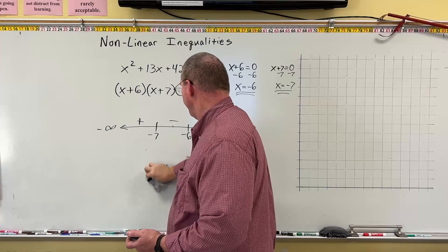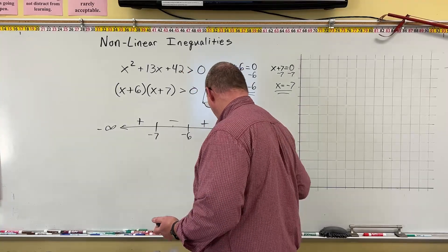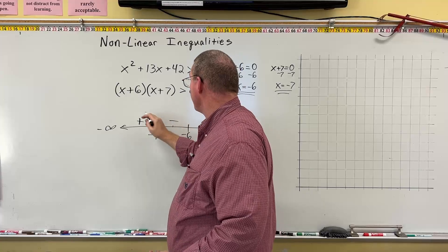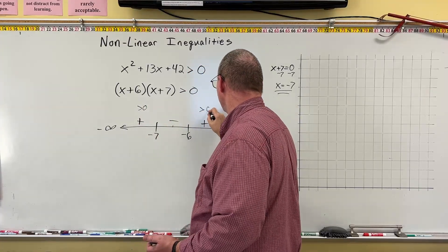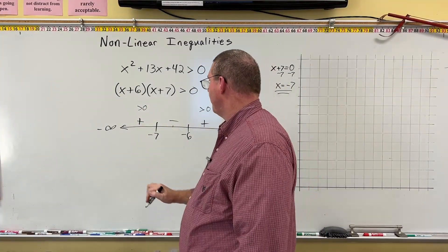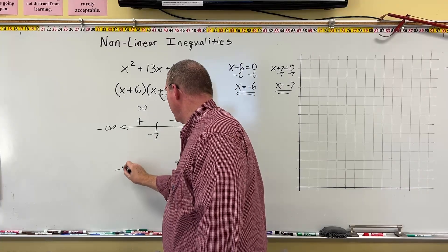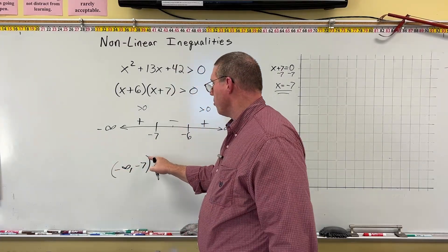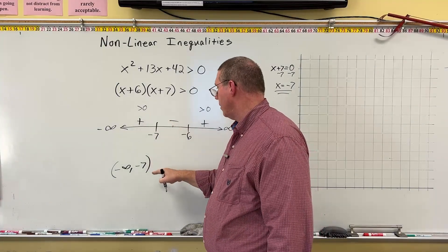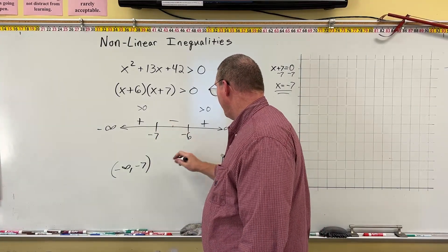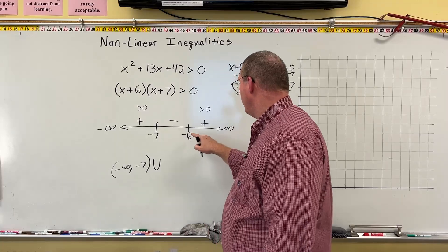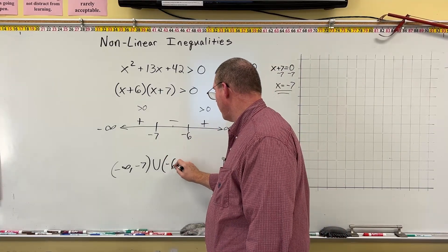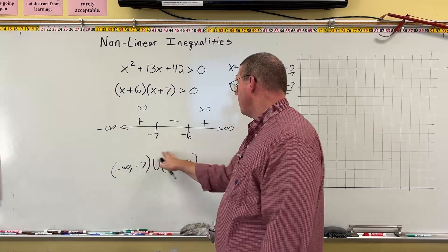Now that we have our sign chart, we're looking for greater than 0. Well, greater than 0 means positive. So this one's greater than 0, and this one's greater than 0. And so we have an interval from negative infinity up to negative 7. Now, I'm going to put parenthesis here because we do not have the or equal to. No bracket. Here we have union. And here we're going to go from negative 6 up to infinity. Parenthesis, negative 6 up to infinity. And this is our answer.